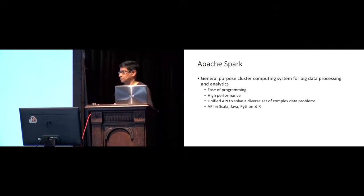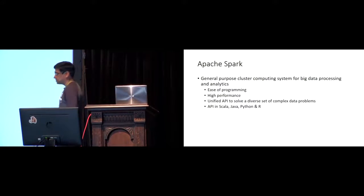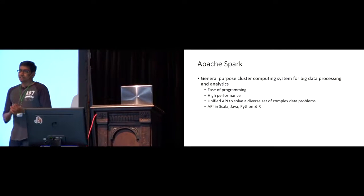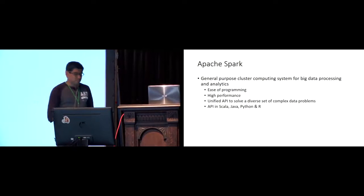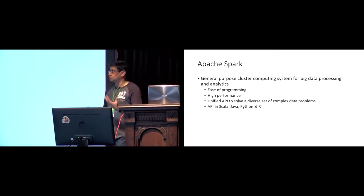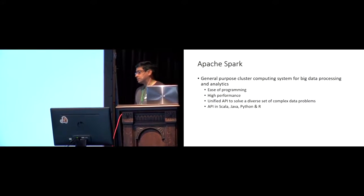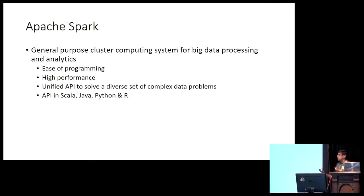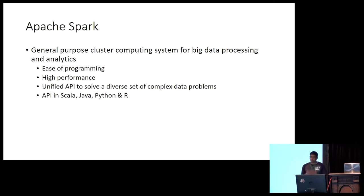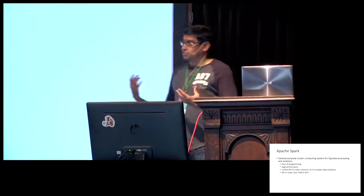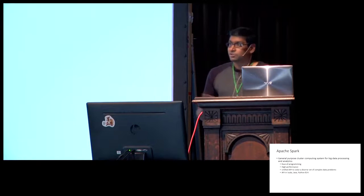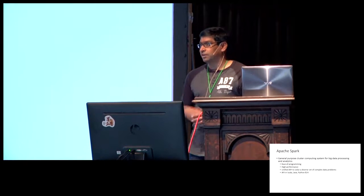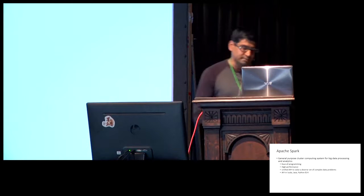The second reason, and for some people a major one, is speed. Spark is much, much faster than Hadoop in lots of workloads — not all, but typical big data workloads. The main reason is that when multiple stages are involved, in Hadoop the output must go through disk between stages, but in Spark it can be done through memory, avoiding the cost of writing to and reading from disk.